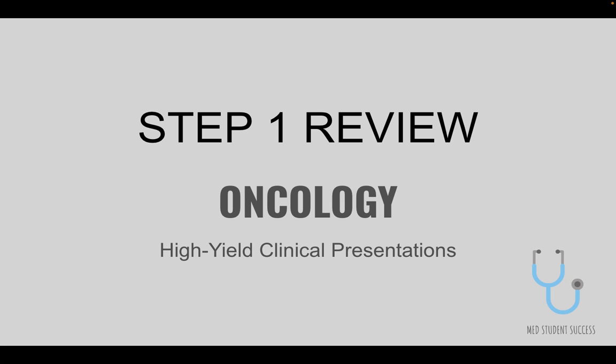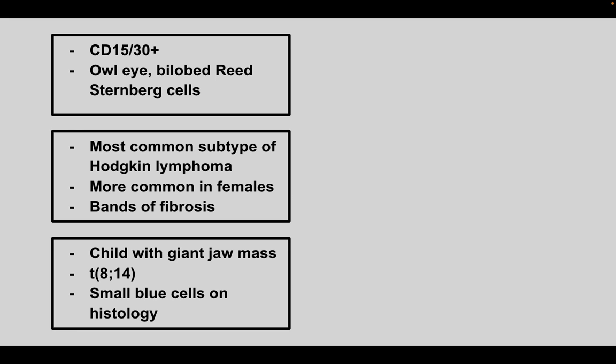Hi everyone, welcome back to another Step 1 review for oncology high-yield clinical presentations. First one is a patient that's CD15 and CD30 positive. They have an owl eye appearance and bilobed nuclei that are called Reed-Sternberg cells. This is Hodgkin's lymphoma.